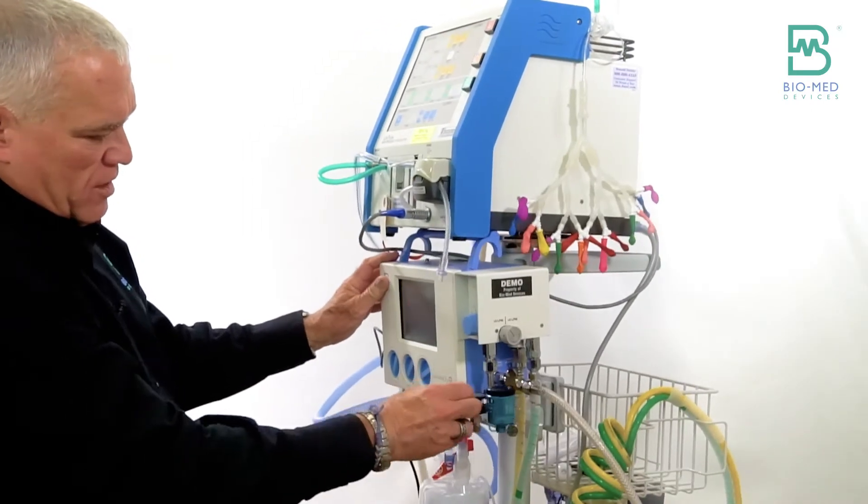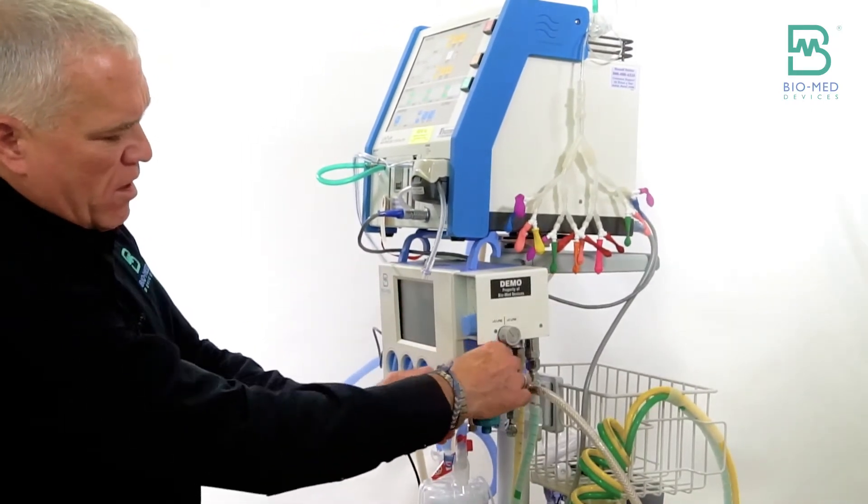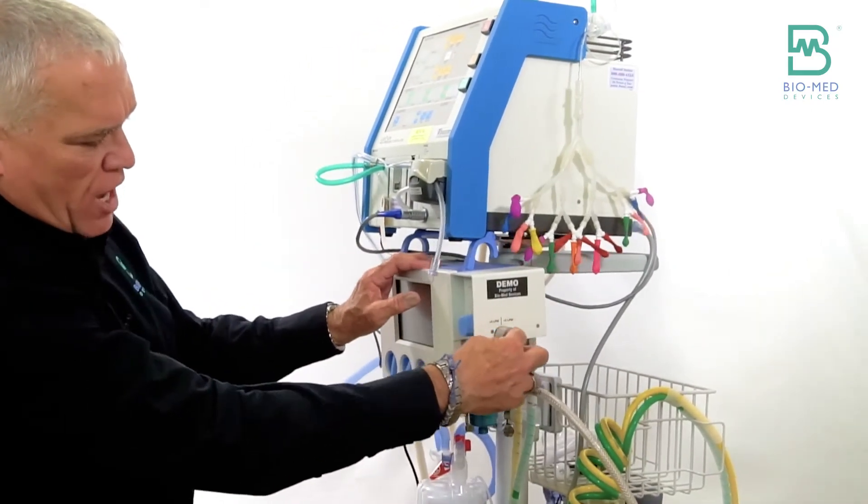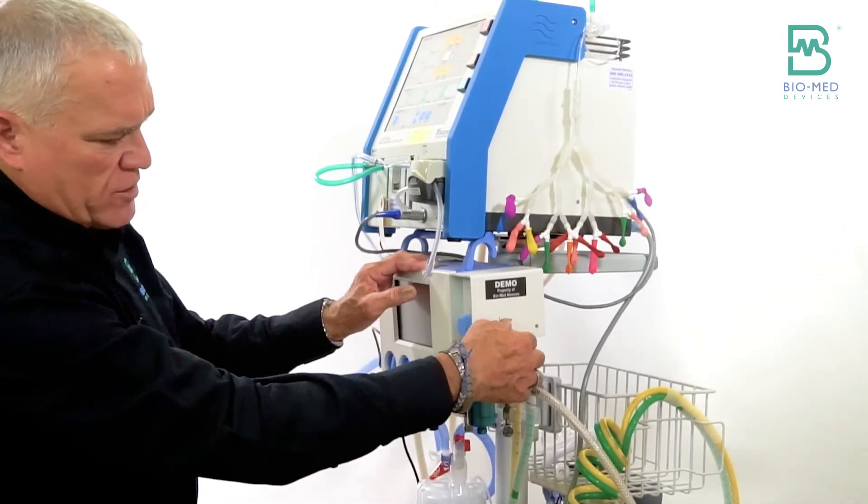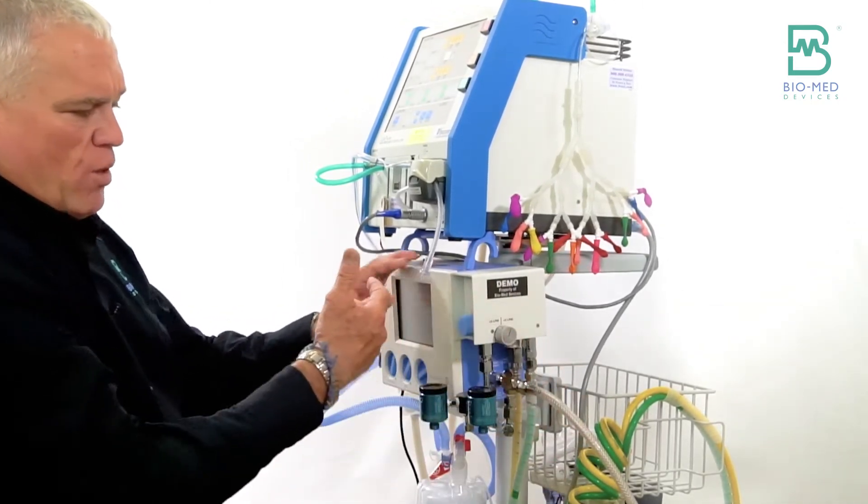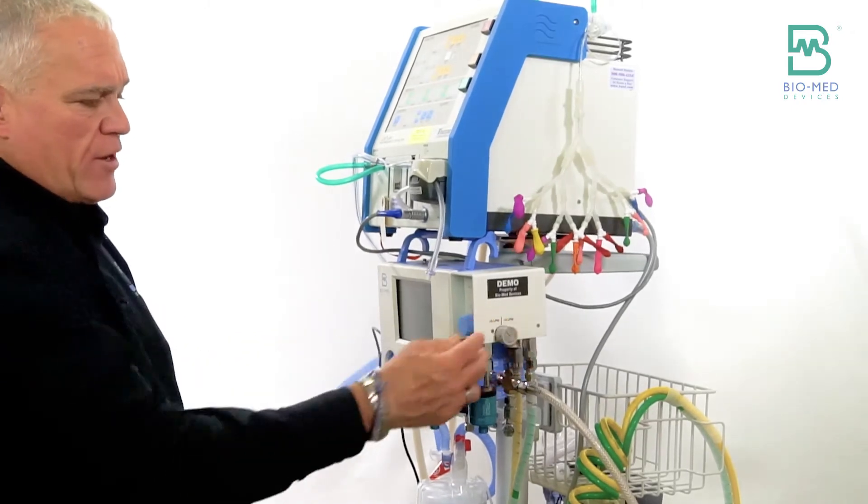As far as the blender goes, the blender has a knob on the side and it says greater than three liters, less than three liters. What that's about is just accuracy.